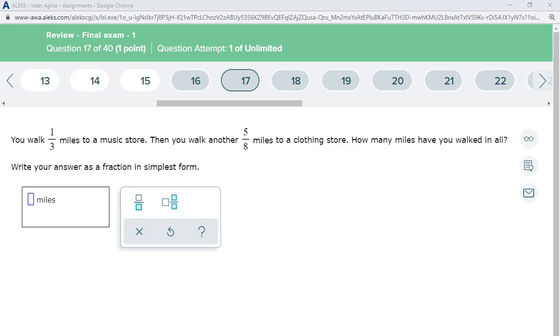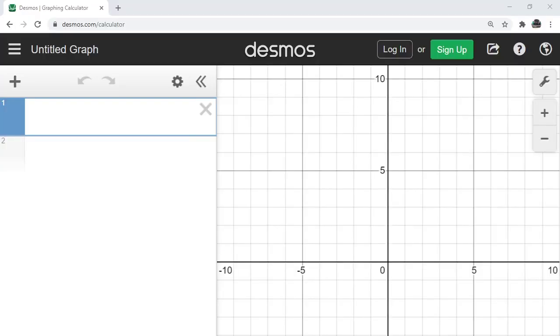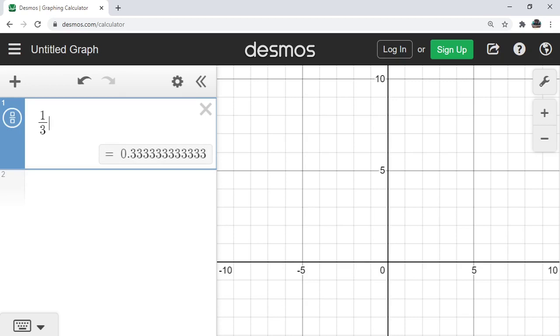So what I'll do is pull up my graphing calculator, which is Desmos, and I'll type in 1/3. So I type 1 divided by 3, and then plus 5 divided by 8. You click on the circle here to give you a fraction. So that is 23/24, and that's your answer.